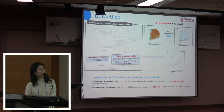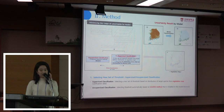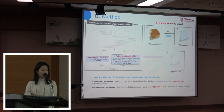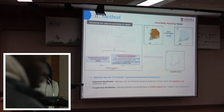For the first concept — minimizing the range of uncertainty by model — I have applied two new concepts: supervised and unsupervised classification. Unsupervised classification is a traditional methodology where a threshold is automatically selected by the model system. Whereas supervised classification is a new methodology I have used by using verification data, in this case a vegetation map, so it is expected to reflect the real situation.